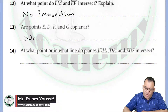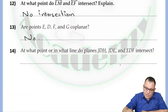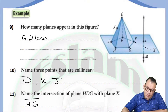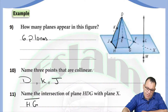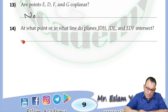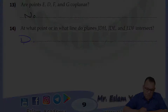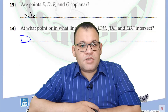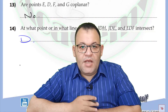At what point or line do the planes JDH, JDE, and EDF intersect? Plane JDH is the first plane, plane JDE is the second, and plane EDF is the third. All of them intersect at one point, which is D. So the intersection of the three planes is point D. And that's how we can find the intersection of a line and a plane, line and line, and plane and plane.